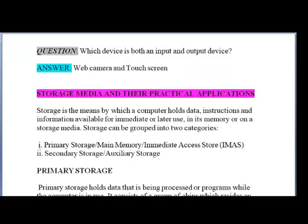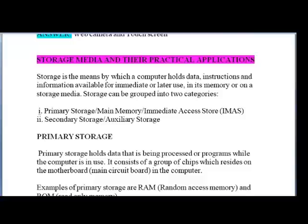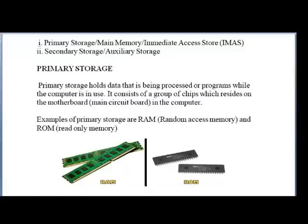Storage media and their practical application. Storage is the means by which a computer holds data, instructions, and information available for immediate or later use, in its memory or on a storage medium. Storage can be grouped into two categories: primary storage (also called main memory or immediate access store) and secondary storage. Primary storage holds data that is being processed or programmed while the computer is in use, and works very actively with the processor. It consists of a group of chips which reside on the motherboard — the main circuit board in the computer.